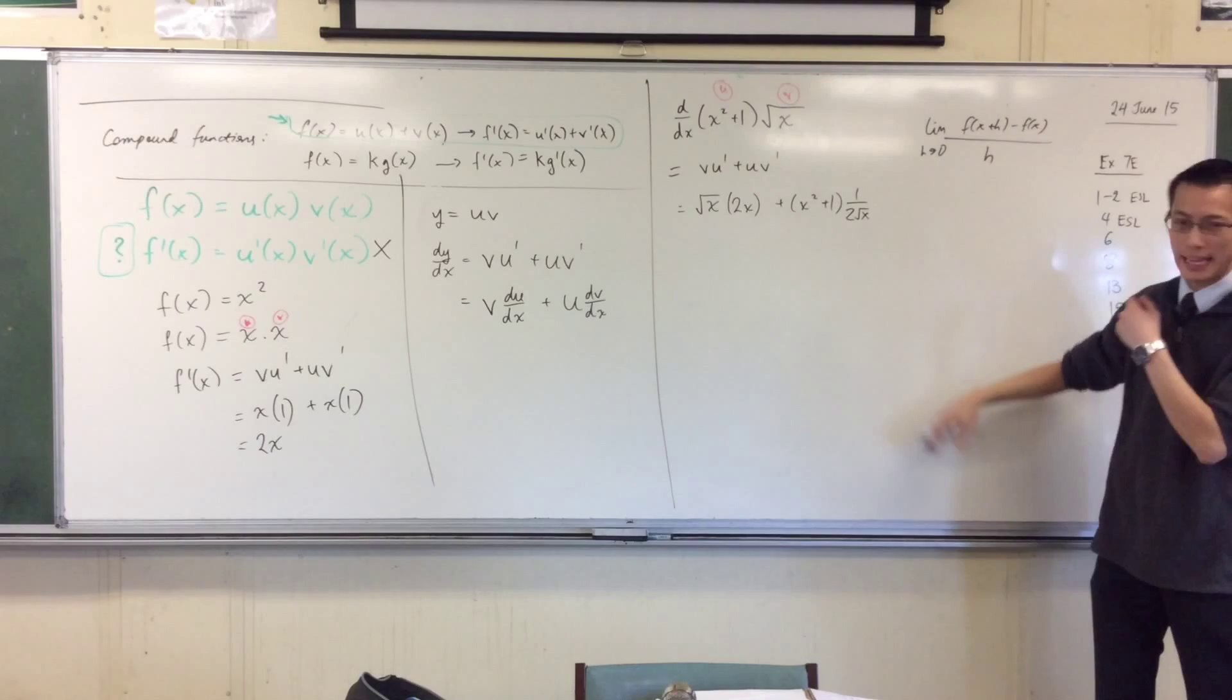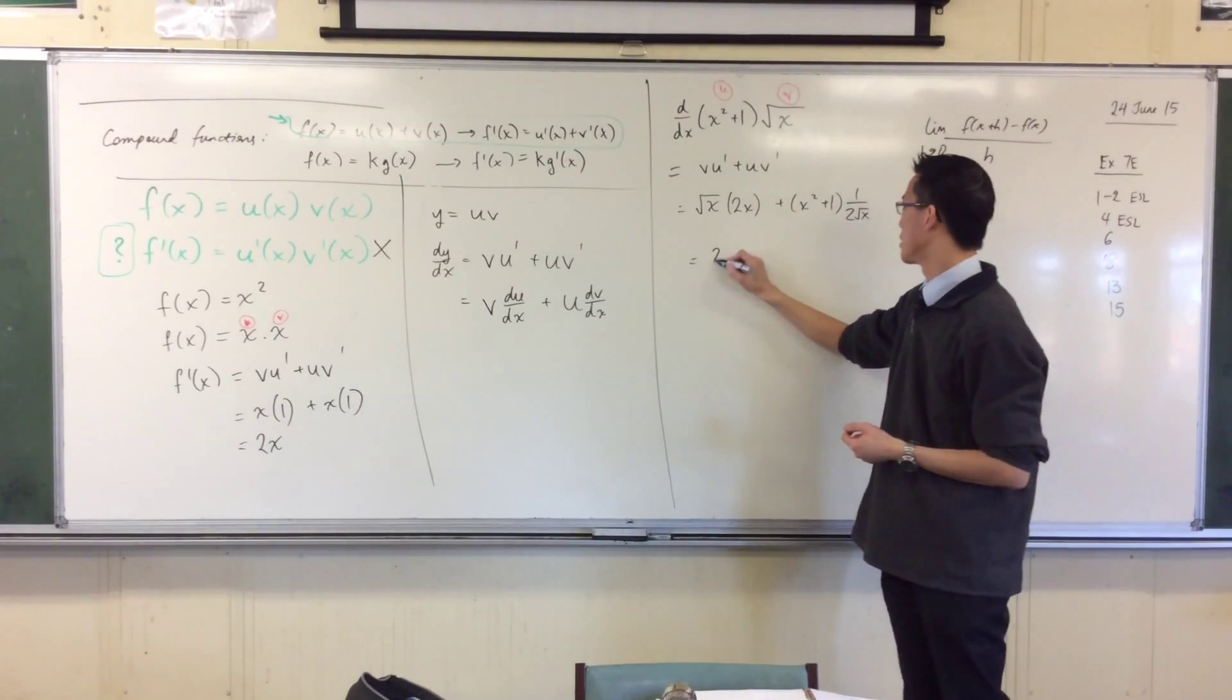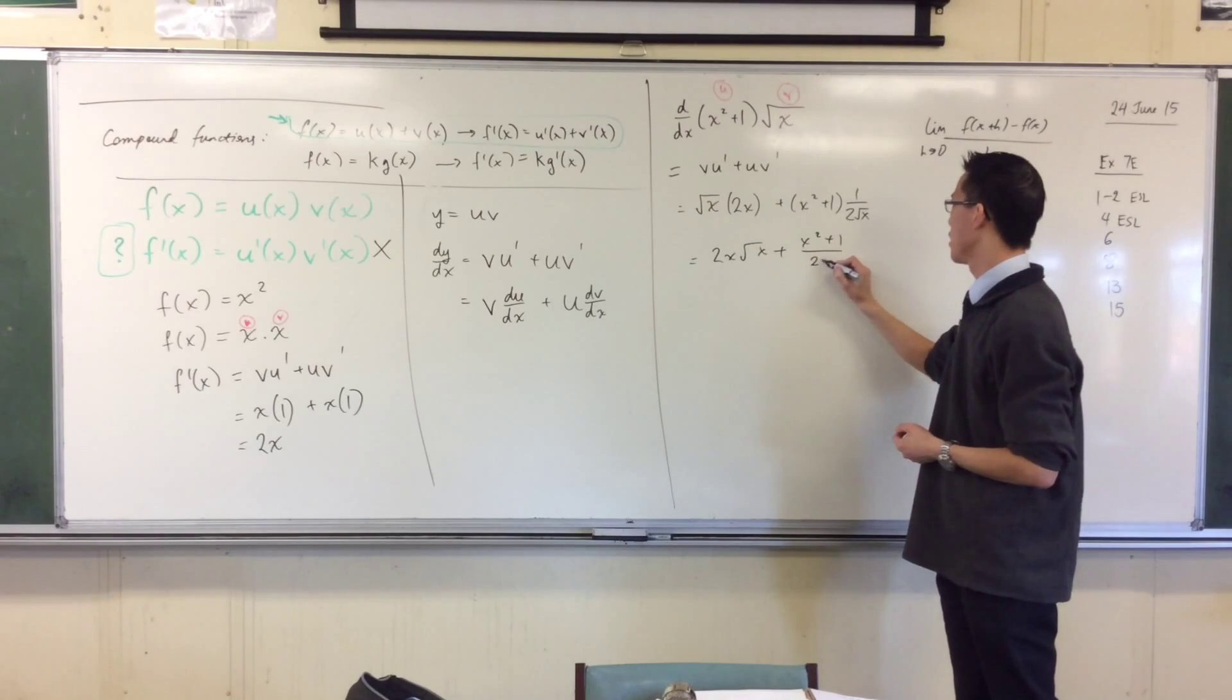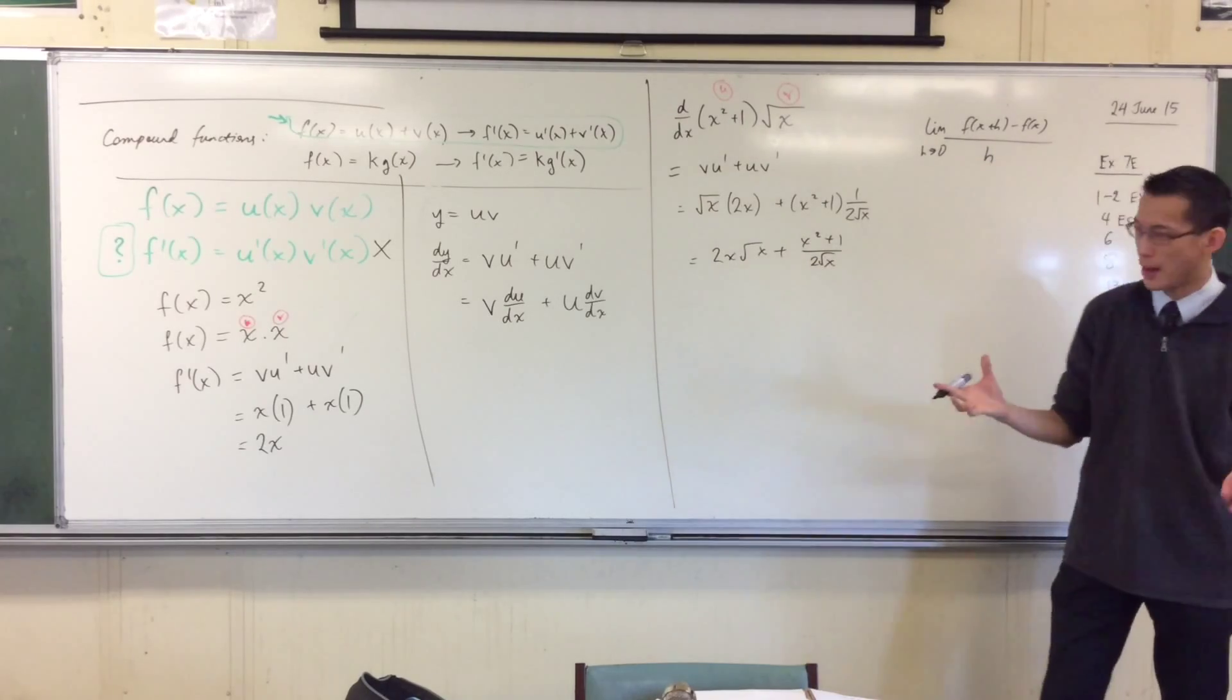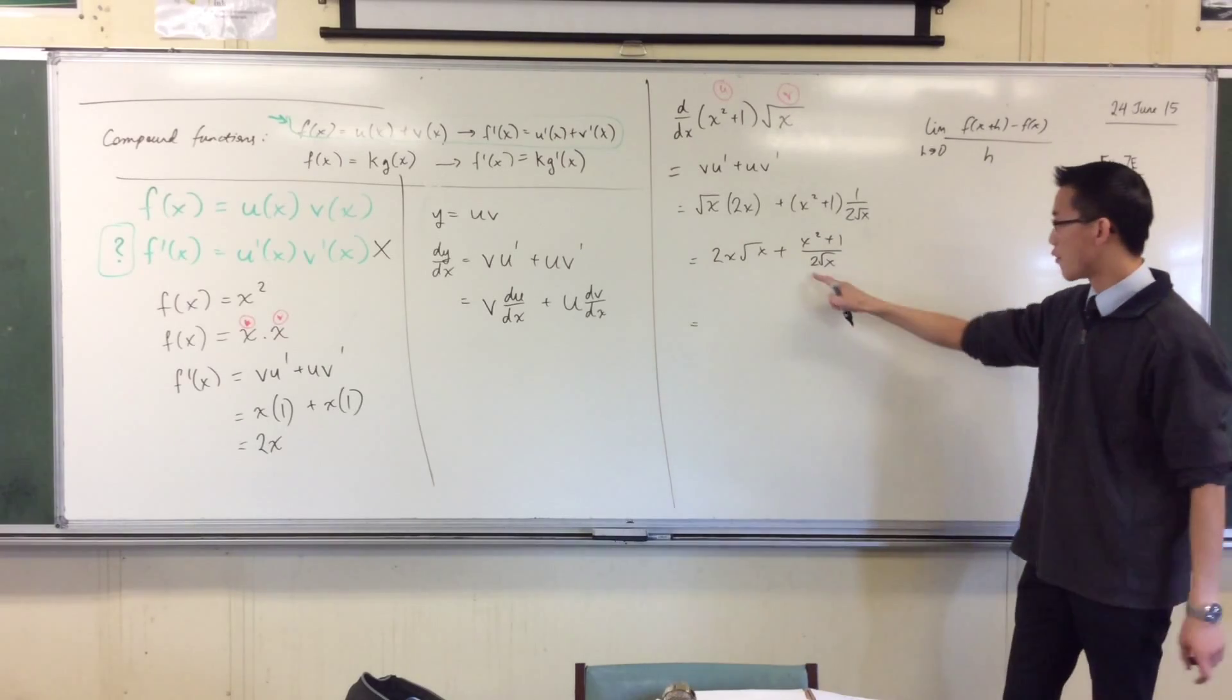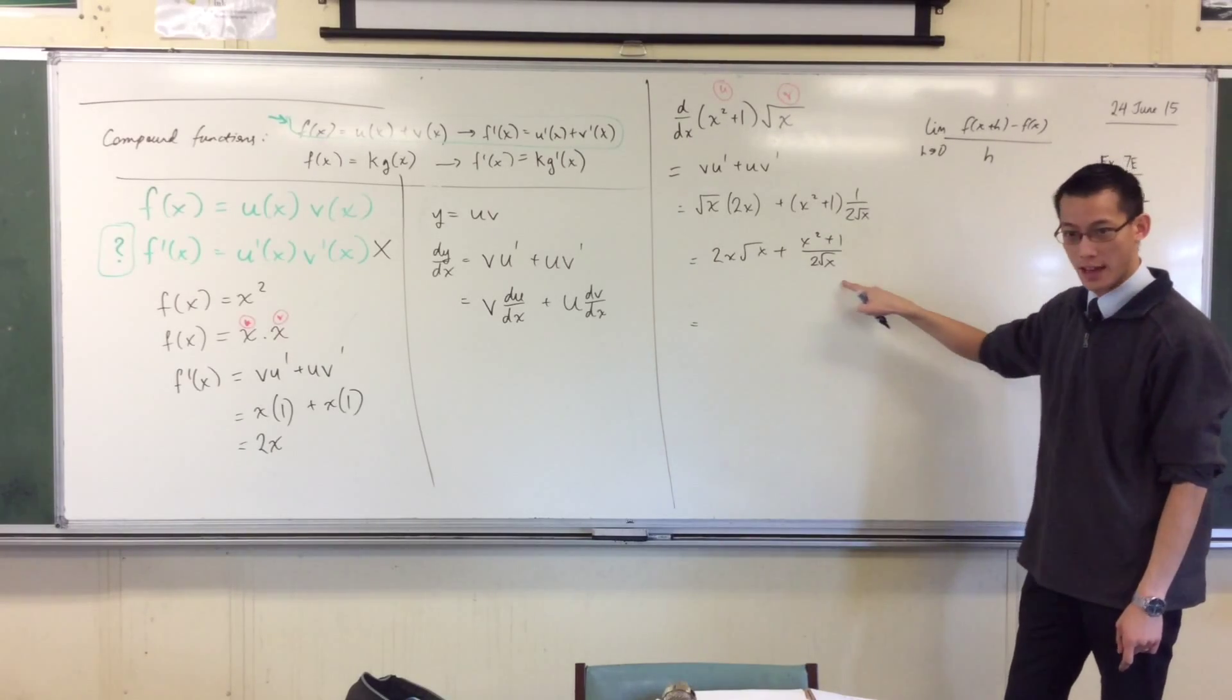Now you can manipulate this algebraically and you'll get an answer. I mean, 2x root x plus, I'm just tidying up the fractions, okay? You can put this on the common denominator, it wouldn't be that hard. Shall we quickly do it? Let's see, if we put this all over 2 root x, right?